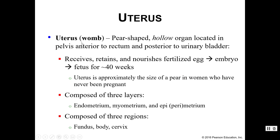Speaking of the uterus — or if you like the term womb — it is a pear-shaped hollow organ. It sits anterior to the rectum but posterior to the urinary bladder, so kind of in the middle within the pelvic cavity. The job of the uterus is to receive, retain, and nourish a fertilized egg, which can grow and develop into an embryo and then into a fetus. This takes approximately 40 weeks, or about 10 months. If you have never been pregnant, your uterus is about the size of a pear; if it has been pregnant, it might be a little bit bigger.